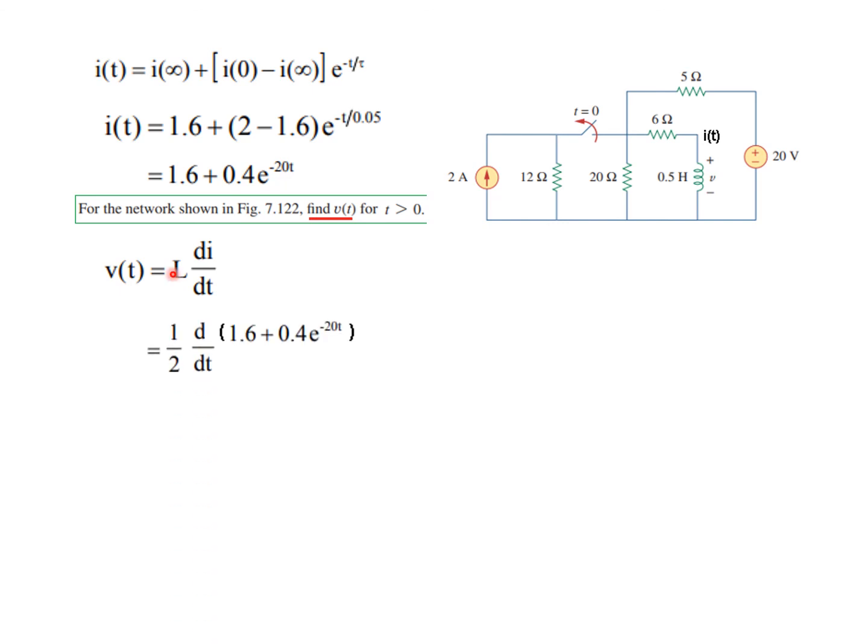So L is 0.5 or one-half, and we have found I. Plug in, take the differential, and solve. The final answer will be V(t) equals minus 4 e to the power minus 20t volts. So I hope this gives you an idea how you can very easily solve this type of problem, which apparently looks complicated, but if you follow the steps it will become very easy. Thank you.